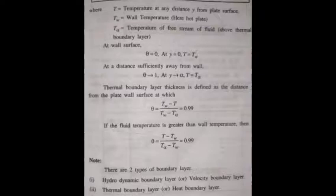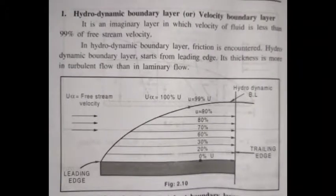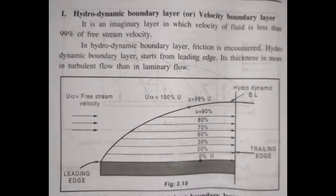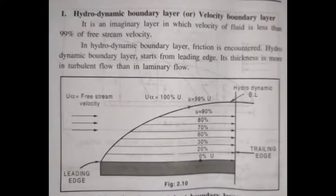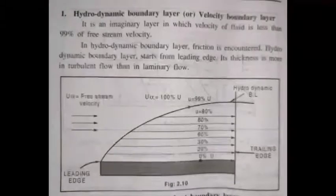The thermal boundary layer and the hydrodynamic boundary layer — also called the velocity boundary layer — can be compared. The hydrodynamic boundary layer is defined as the imaginary layer in which the velocity of fluid is less than 99% of the free stream velocity. The hydrodynamic boundary layer starts from the leading edge, and its thickness is more in turbulent flow than in laminar flow.